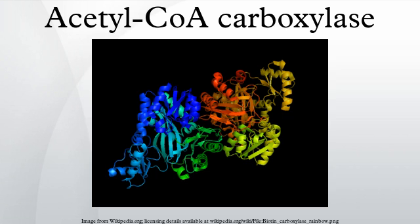ACC1 is found in the cytoplasm of all cells but is enriched in lipogenic tissue, such as adipose tissue and lactating mammary glands, where fatty acid synthesis is important. In oxidative tissues, such as skeletal muscle and the heart, the ratio of ACC2 expressed is higher. ACC1 and ACC2 are both highly expressed in the liver where both fatty acid oxidation and synthesis are important. The differences in tissue distribution indicate that ACC1 maintains regulation of fatty acid synthesis whereas ACC2 mainly regulates fatty acid oxidation.